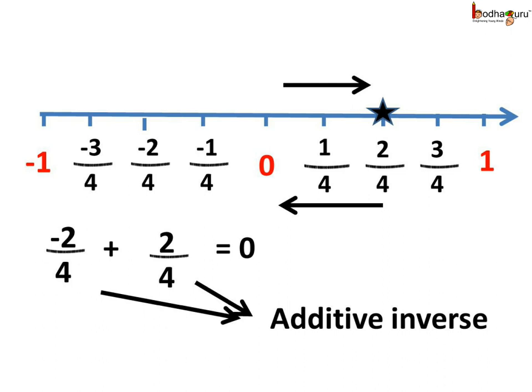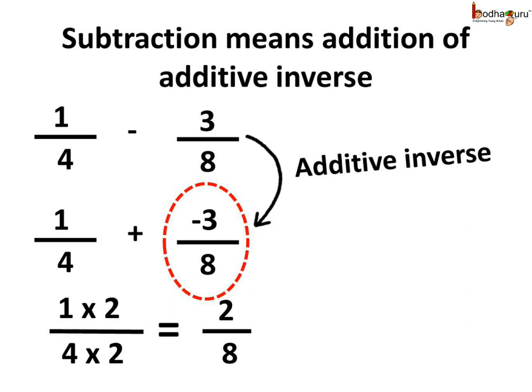The two additive inverses have the same absolute values but opposite signs. Thus, subtraction of any rational number is the addition of its additive inverse.